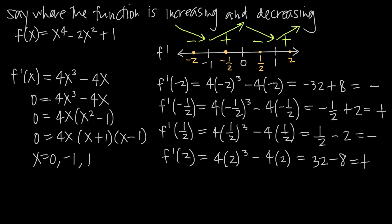The function changes direction at x = -1, at x = 0, and at x = 1, confirming these are critical points. At x = -1 the function was decreasing and then starts increasing. At x = 0 it starts decreasing again, and at x = 1 it starts increasing again.